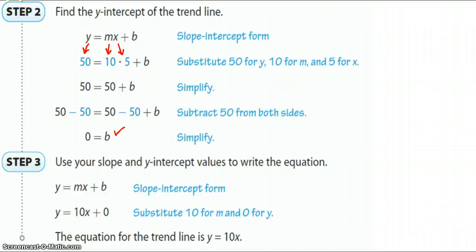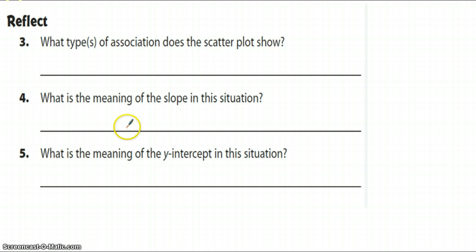Okay? So what I need you to do is go ahead and stop the video here and tell me what type of association does the scatterplot show, or what type of correlation. Remember, association and correlation is the same identical thing, so you want to tell me whether it is linear, which we can see is a straight line, whether it is increasing or decreasing or whatever. What is the meaning of the slope in this situation? So what does 10 mean, because that's what we said the slope was. And then what is the meaning of the y-intercept? And remember that the y-intercept, we started at 0, so the y-intercept is 0. What does that mean? Okay? And when you're done, just come back.